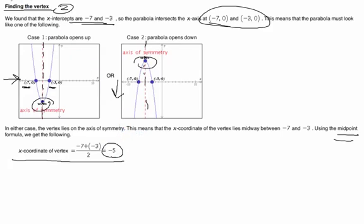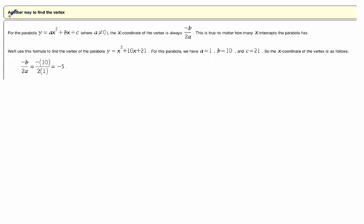Now, there is another way to find that vertex. If we think of our parabola as the standard form, ax² + bx + c, where a, b, and c are constants, then the x-coordinate is going to be a formula: negative b over 2a.